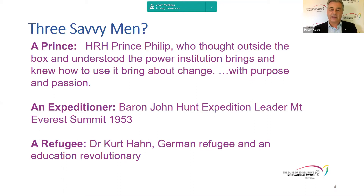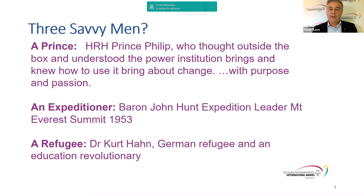A very key person is Dr. Kurt Hahn, a German refugee who left before the outbreak of the Second World War and started a school in Scotland called Gordonstoun, attended by Prince Philip. Prince Philip was very influenced by Hahn's more inclusive form of education — where it was not just the academic syllabus, but very much developing the whole person.